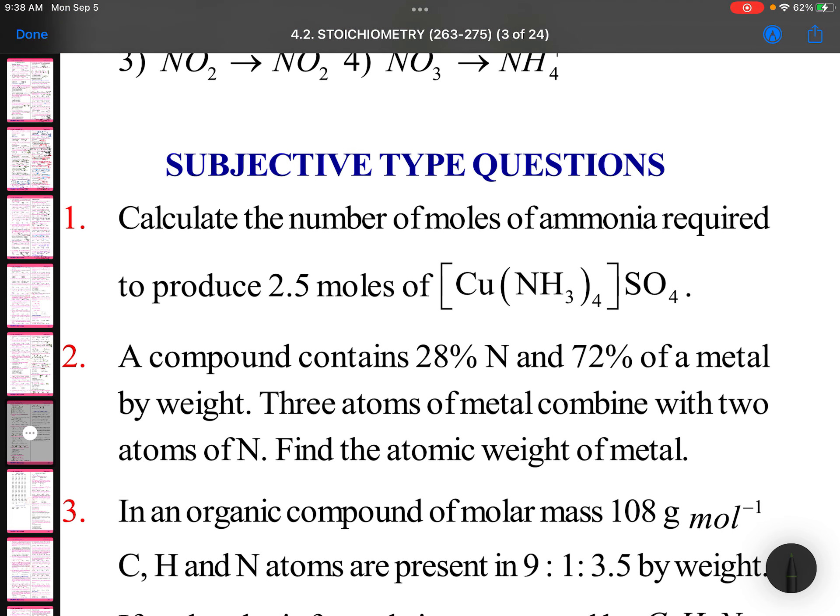Calculate the number of moles of ammonia required to produce 2.5 moles of [Cu(NH3)4]SO4. By seeing this we can say simply 1 mole of copper ammonium sulfate, that is complex compound, is having 4 moles of ammonia. Then 2.5 moles, if you want, 2.5 into 4, that is nothing but 10 moles. Rest questions we will see in another assignment.